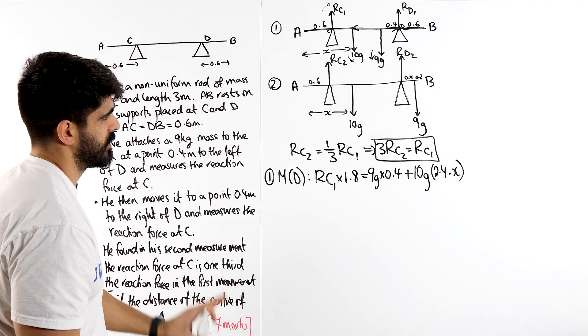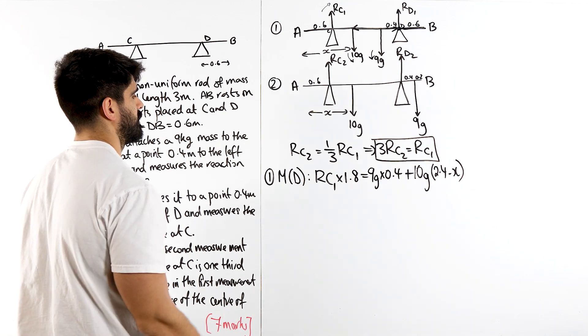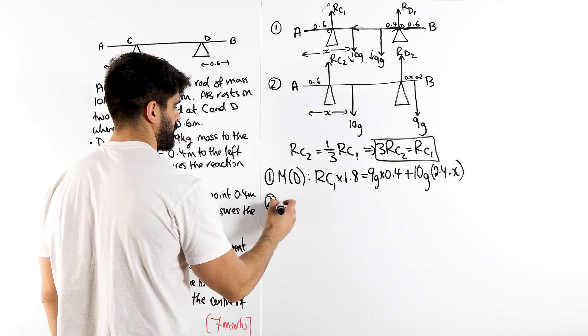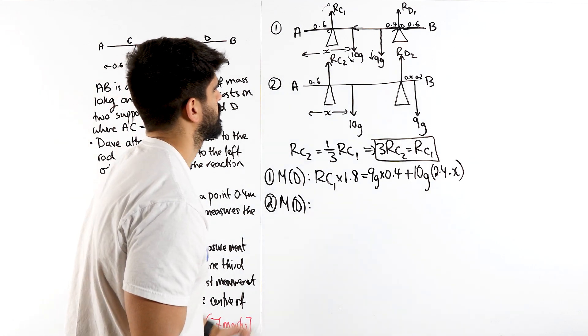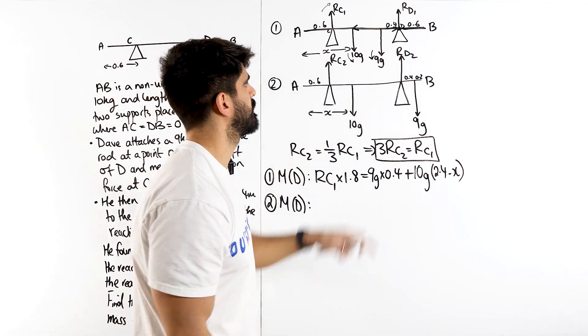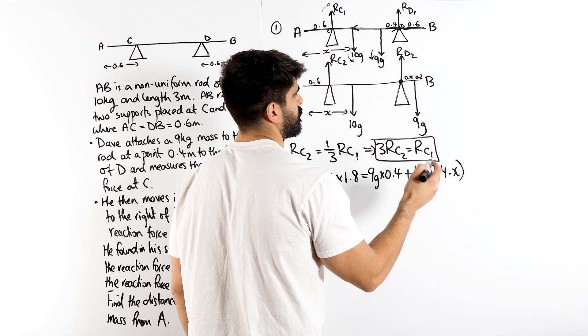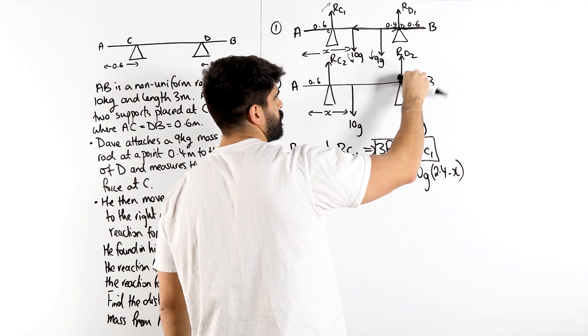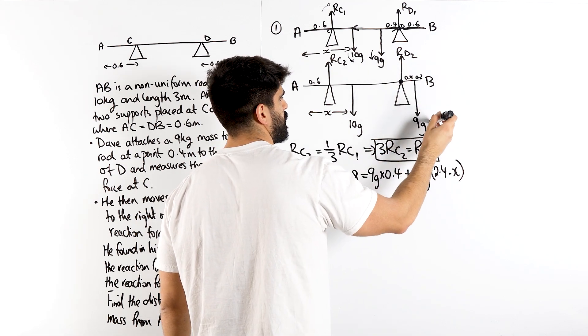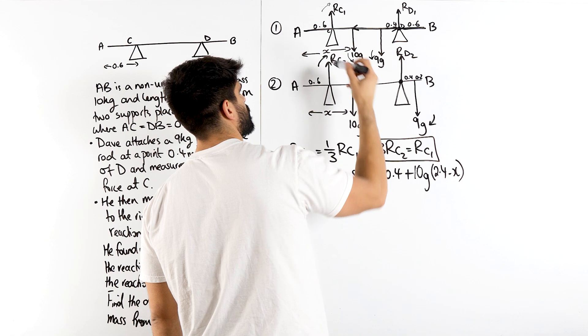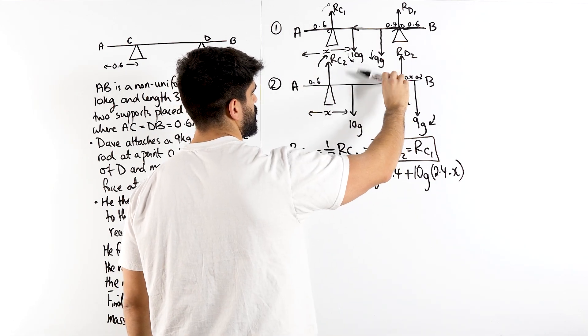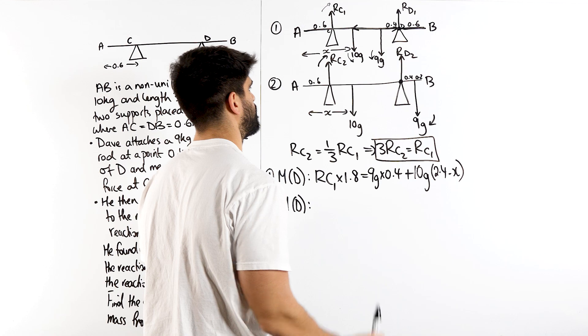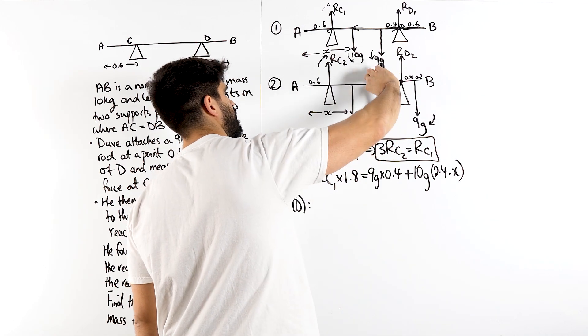Now let's look at the second situation, taking moments about D. It looks a bit cleaner here. So taking moments about here, this one's a bit more different. This 9G, this downward force on the other side is actually a clockwise moment, and the RC2 is also clockwise, that one doesn't change. And it means 10G is the only one that is going to be anti-clockwise.